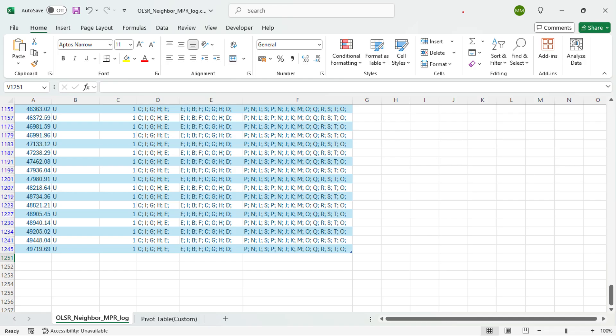The log file shows the MPR set selected for node U. It is C, I, G, H, and E. NetSim's MPR set exactly matches with the MPR set obtained from theory in the paper. Thank you for watching the video.